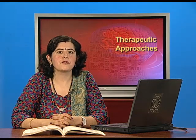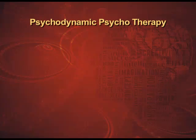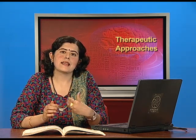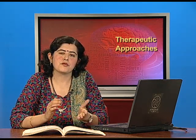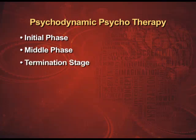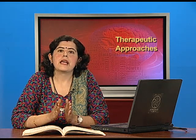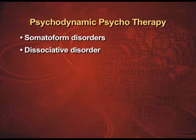The duration of psychodynamic psychotherapy is normally four to five sessions per week for a number of years. The stages are: first, the initial phase where the client becomes aware of general procedures, rules, and routines, establishes rapport with the therapist, and begins recollecting material from the unconscious. The middle phase — the actual treatment phase — involves transference, resistance, interpretation, and working through. The final termination stage is where the client has gained insight into their problems, has recovered, and is better equipped to handle life issues. Psychodynamic psychotherapy is most used for somatoform disorders, dissociative disorders, and schizophrenia.